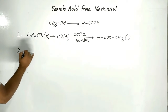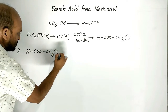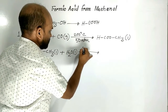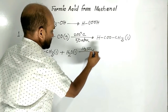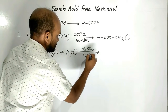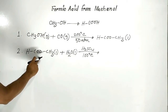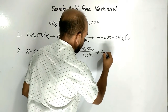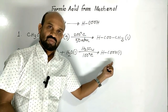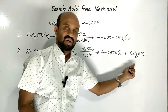Step two. This methyl formate is hydrolyzed in the presence of sulfuric acid, and the temperature of the reaction is maintained at 100 degrees Celsius. Under these conditions, methyl formate changes to formic acid, which is liquid under normal conditions, and methanol is formed again as a by-product.